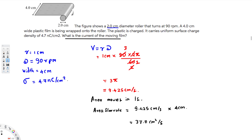Now, the charge density has centimeters squared in the denominator, and we have centimeters squared per second in our area flow rate. If we multiply these two together, the centimeters squared cancel and we get coulombs per second. Since ampere equals coulombs per second, multiplying charge density by area flow rate gives us the current — that's the connection.